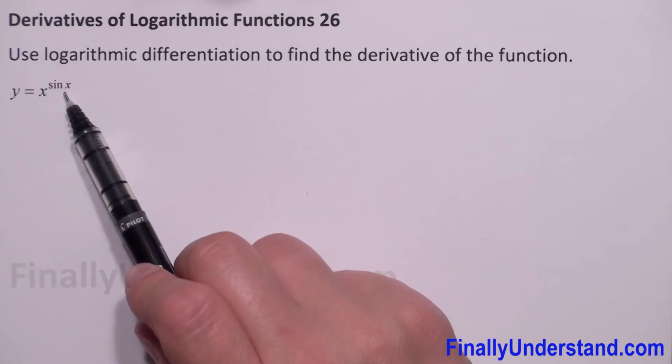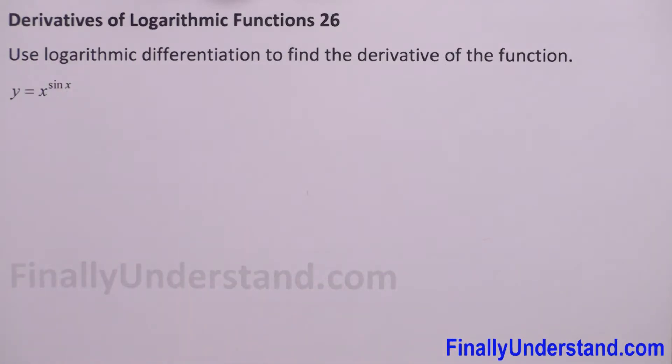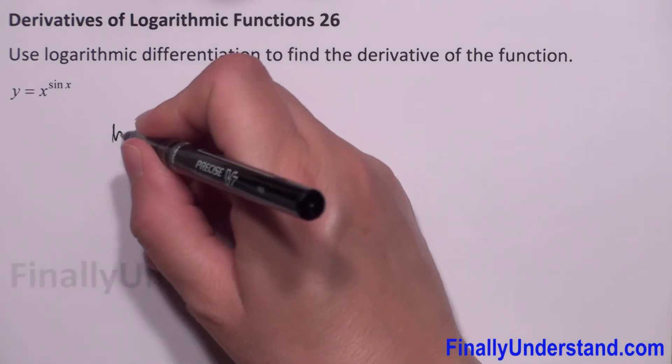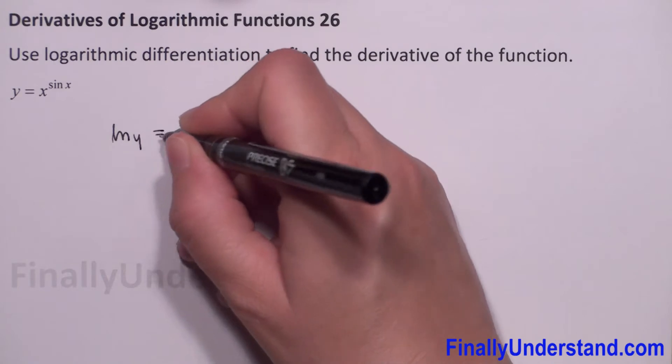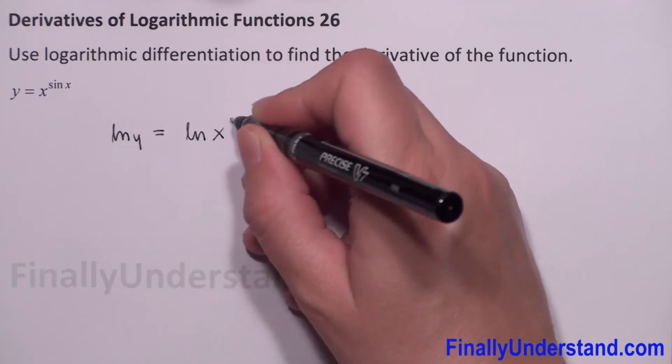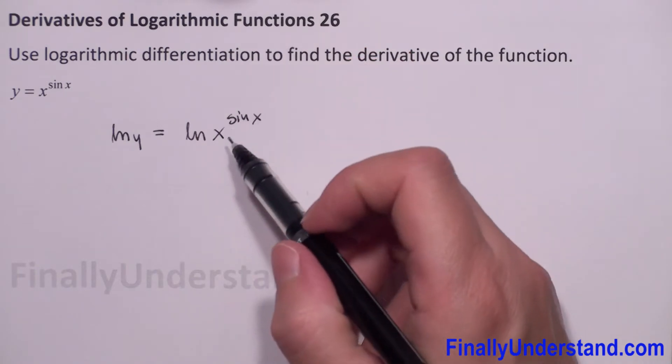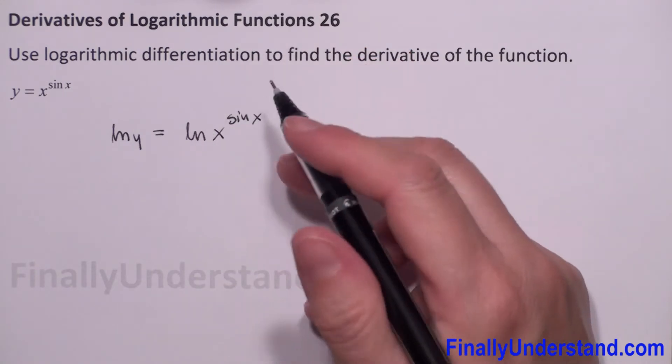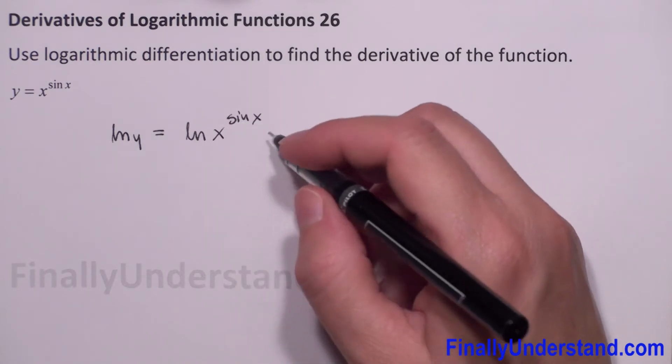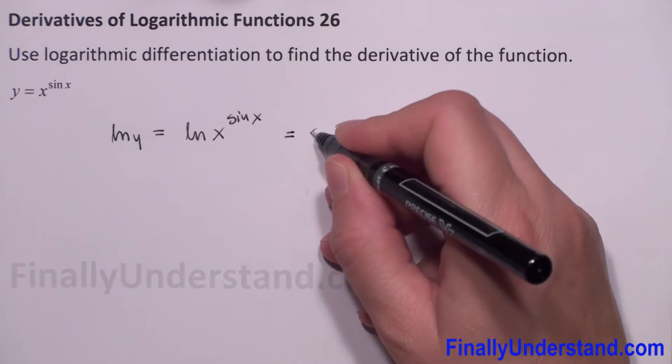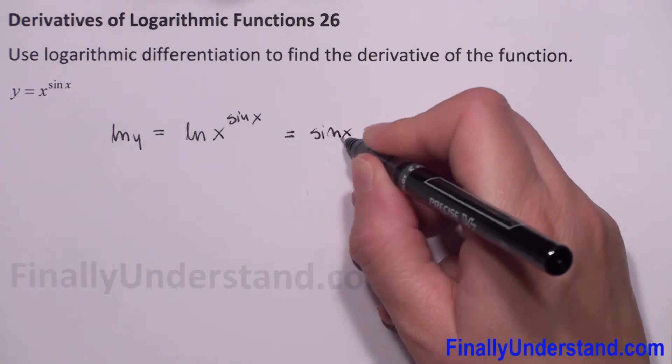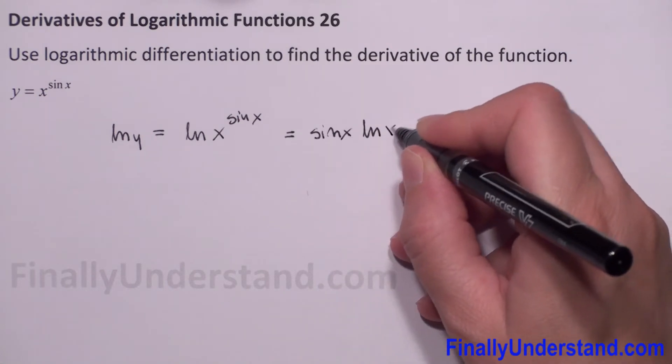Because we have variable in the base and in the exponent, first we will take natural log of both sides. So we will have natural log of y equals natural log of x to power sine of x. Next we can use properties of log and rewrite this right side to sine of x times natural log of x.